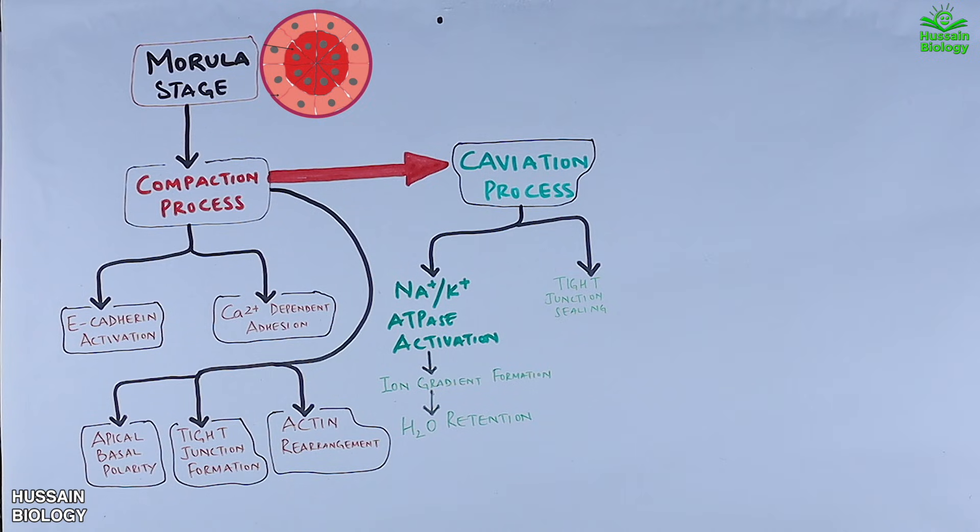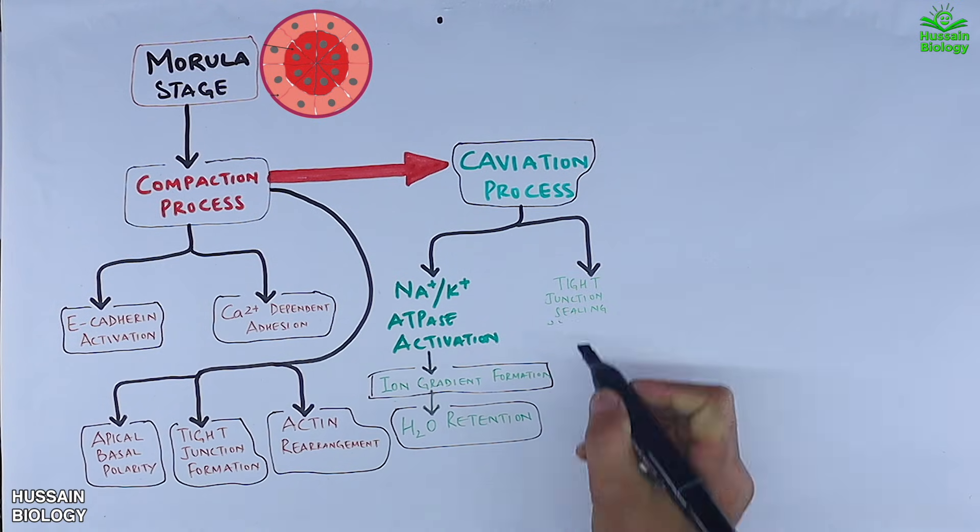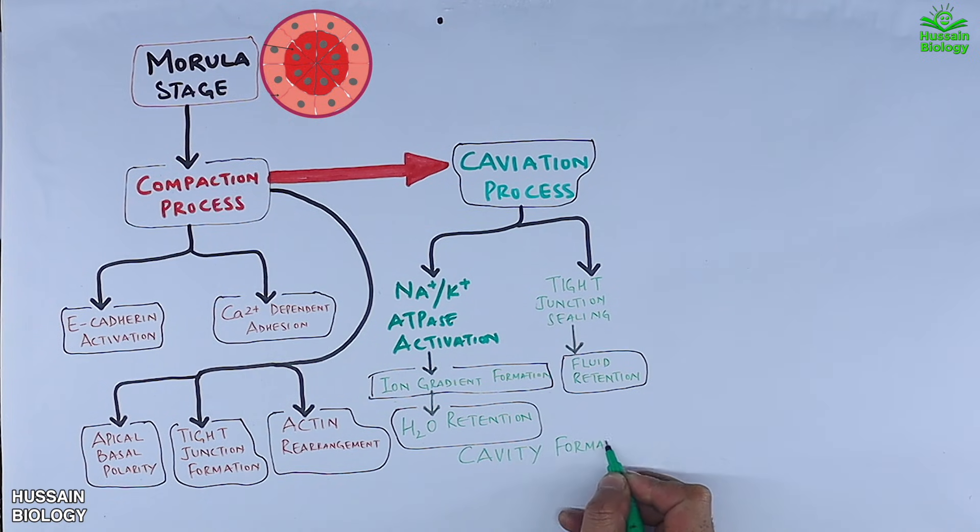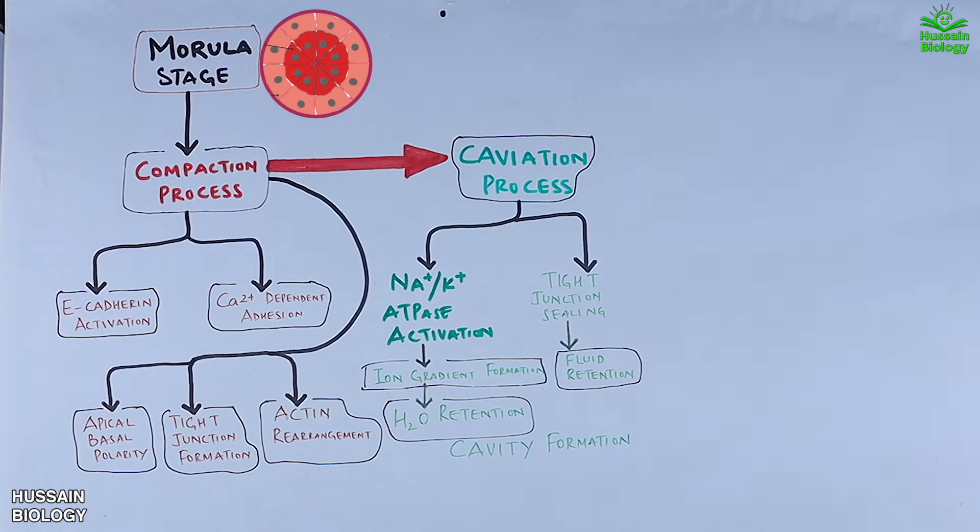The tight junctions between the outer cells ensure that the fluid drawn in by the ion gradient is retained within the embryo. This sealing prevents fluid leakage, ensuring the proper development of the cavity. Together both these mechanisms facilitate fluid retention, leading to formation of central cavity called the blastocoel. Now from here we move on to early blastocyst stage.